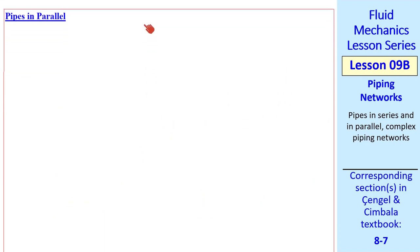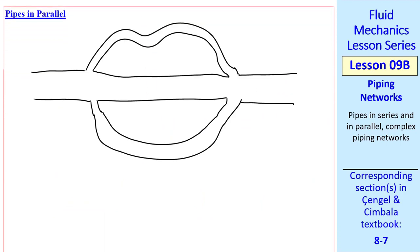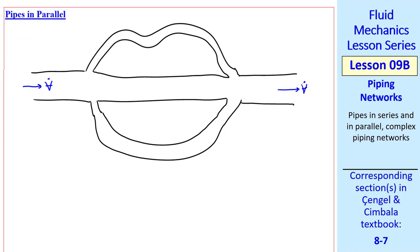Now let's consider pipes in parallel. Suppose we have a system like this, with some volume flow rate, which must be the same at the inlet and outlet if there are no leaks. Let's call this branch 1, 2, and 3. There will be, in general, different volume flow rates through these three branches, V dot 1, V dot 2, and V dot 3.